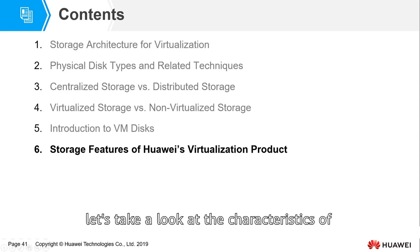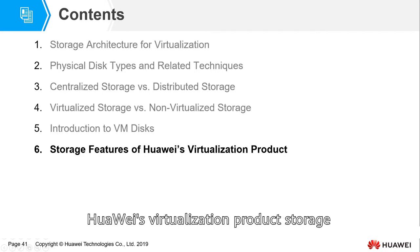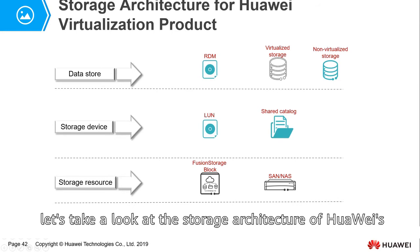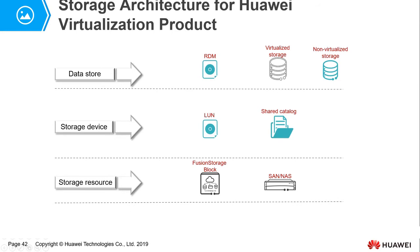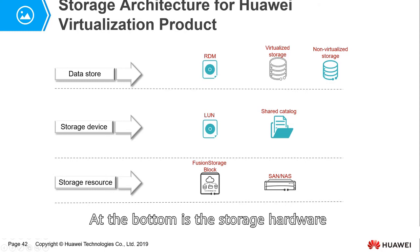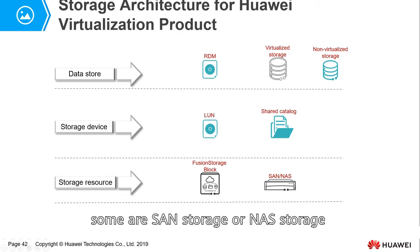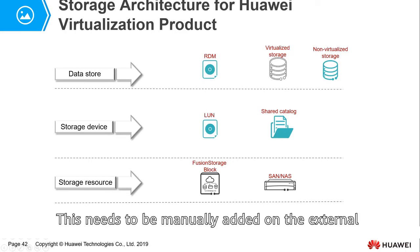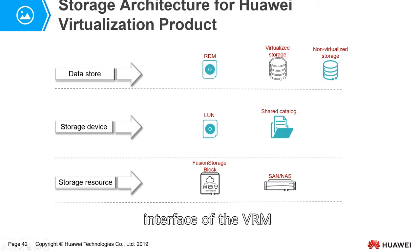After finishing this basic storage knowledge in cloud computing, let's take a look at the characteristics of Huawei's virtualization product storage. Let's look at the storage architecture of Huawei's virtualization products. At the bottom is the storage hardware — some are SAN storage blocks, some are object storage or NAS storage. All of them are called storage resources, and must be manually added on the external interface of the VRM.